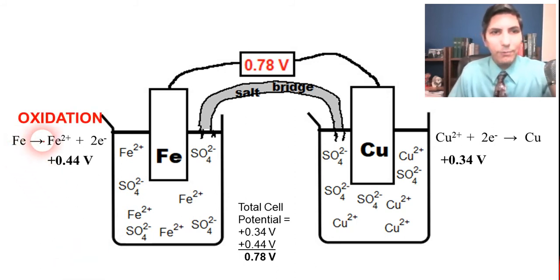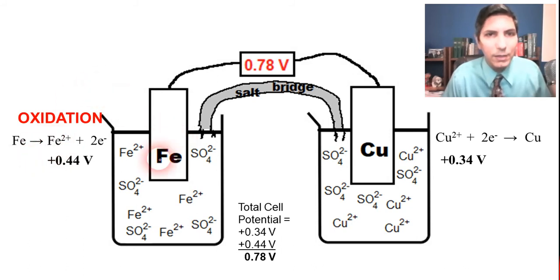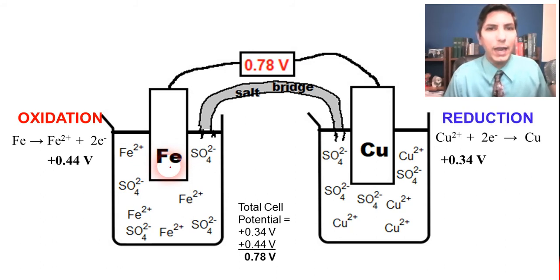Now, we said that this half reaction over here is oxidation. Now, when you have oxidation in chemistry, we say that this side of the galvanic cell, if there's oxidation taking place there, that's called the anode. And so oxidation takes place at the anode.